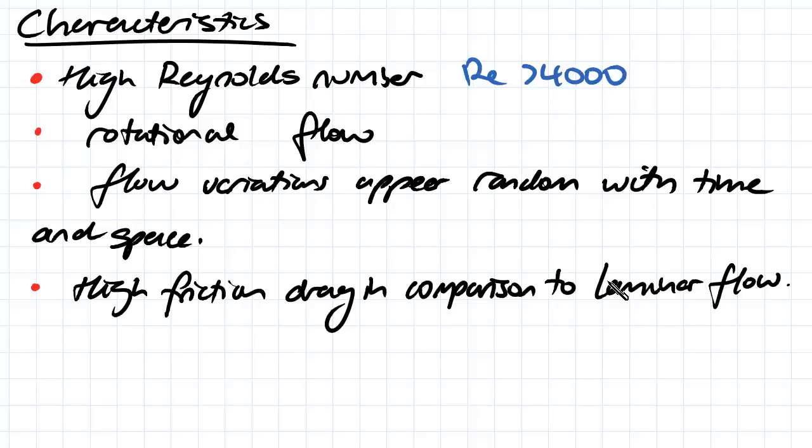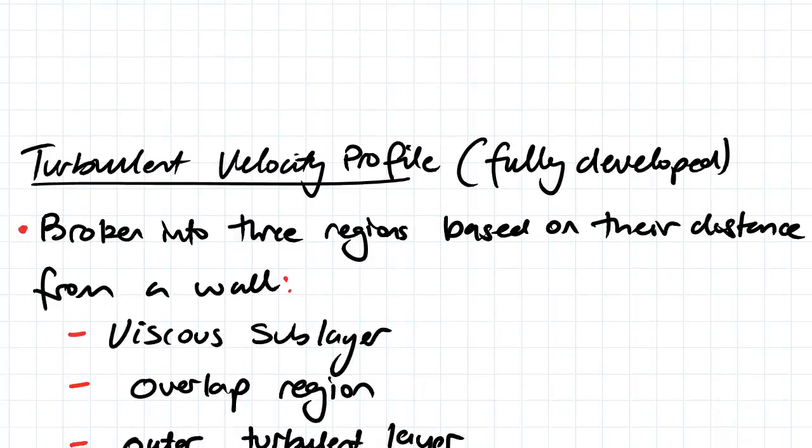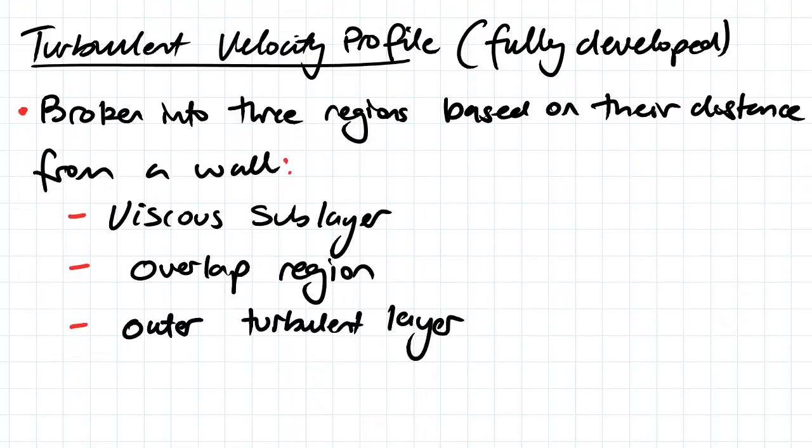We've got a higher value for friction for our turbulent flows compared to our laminar flows. It has a much more complex velocity profile. The laminar fully developed flow, we had that parabolic distribution. We came up with an equation, we came up with an average velocity.